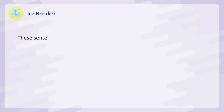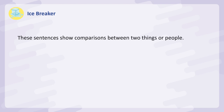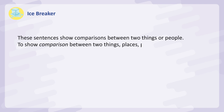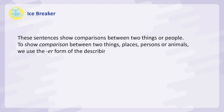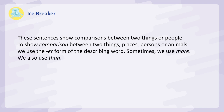These sentences show comparisons between two things or people. To show comparison between two things, places, persons, or animals, we use the ER form of the describing word. Sometimes we use 'more.' We also use 'than.'